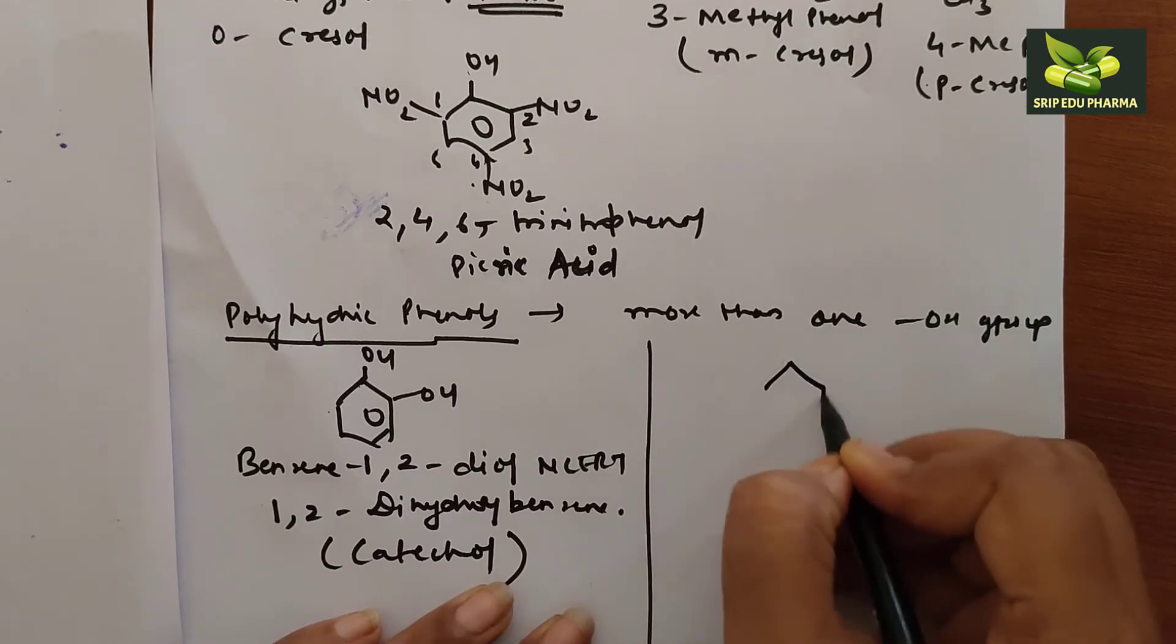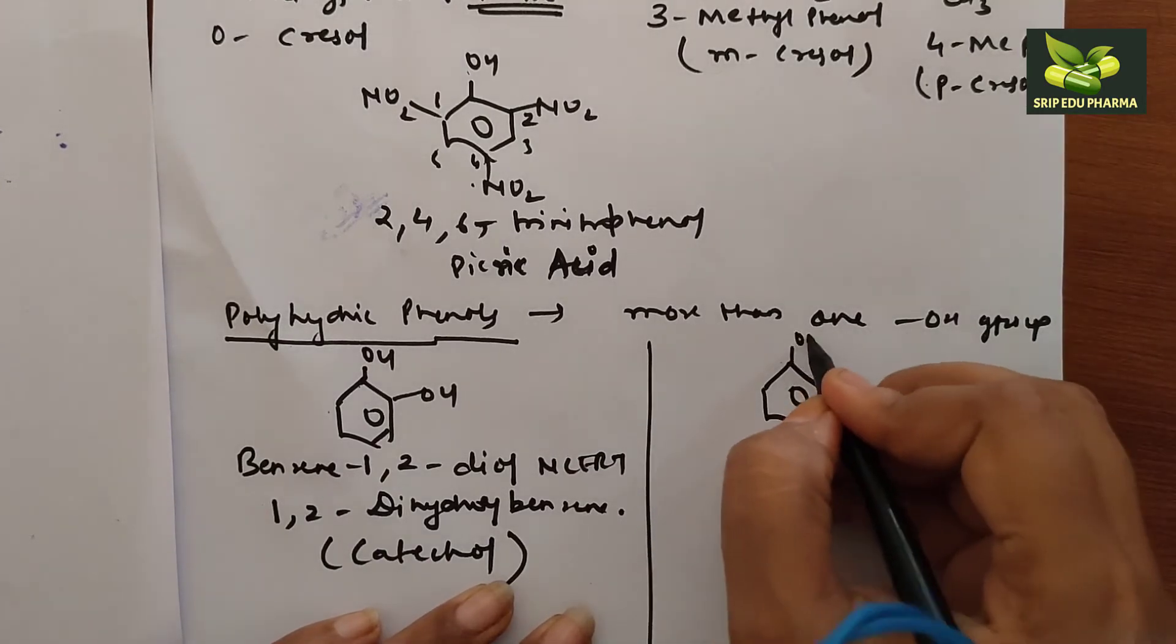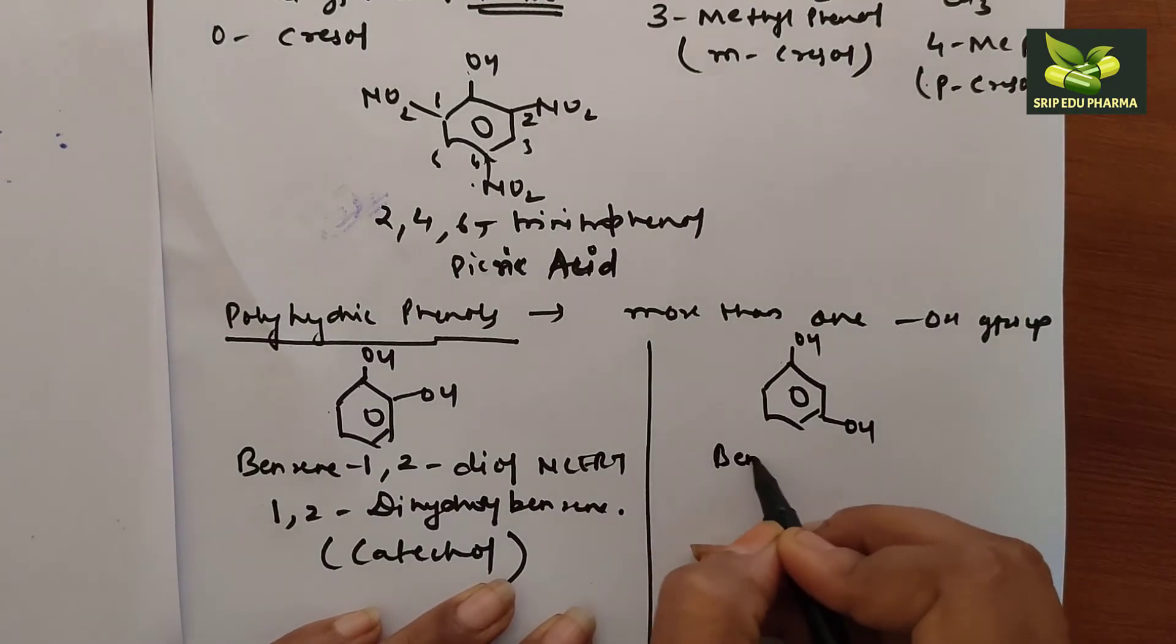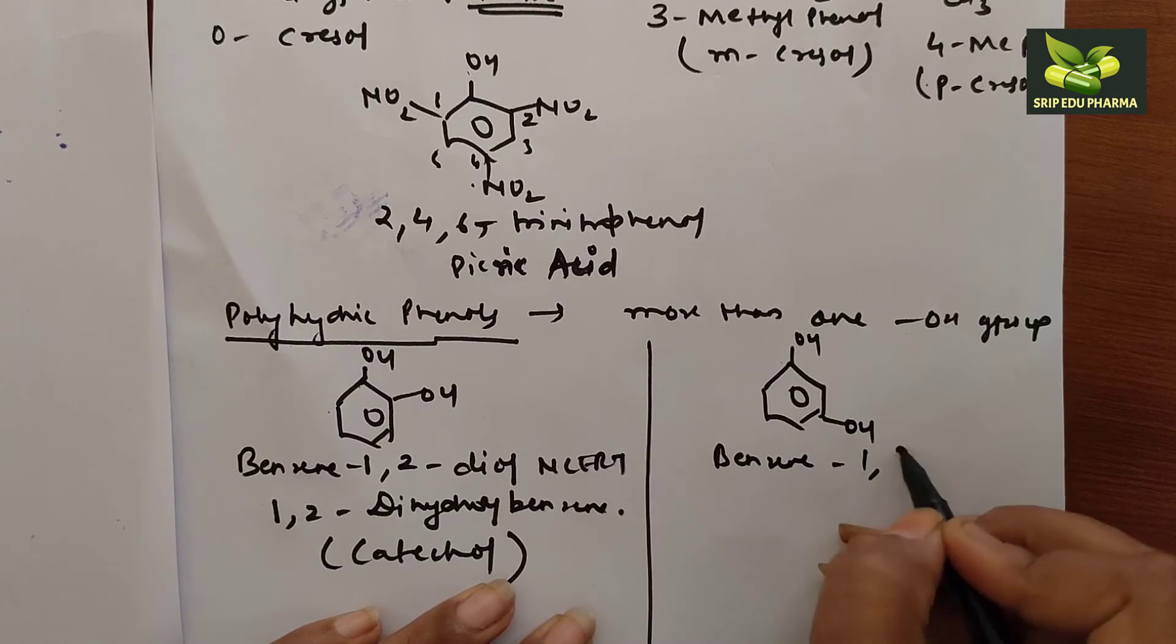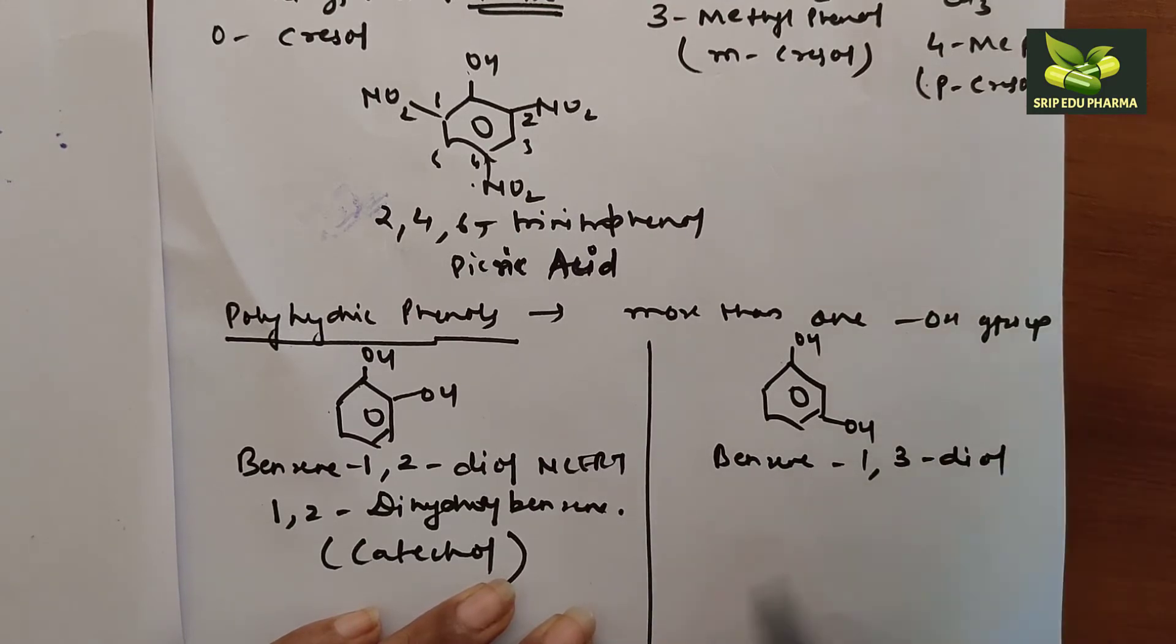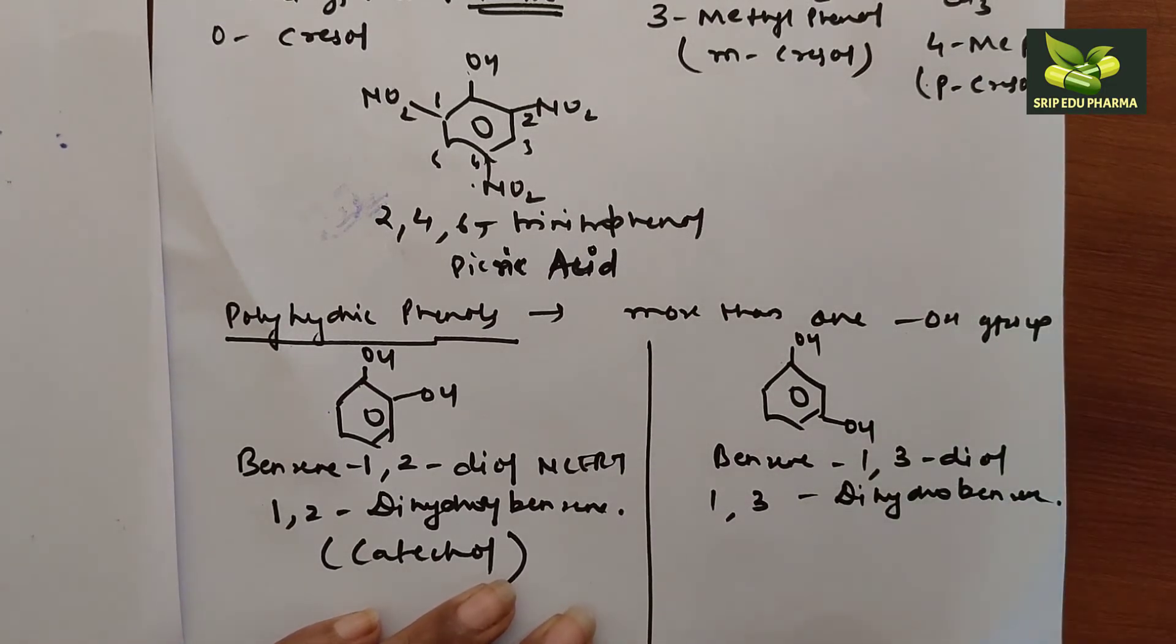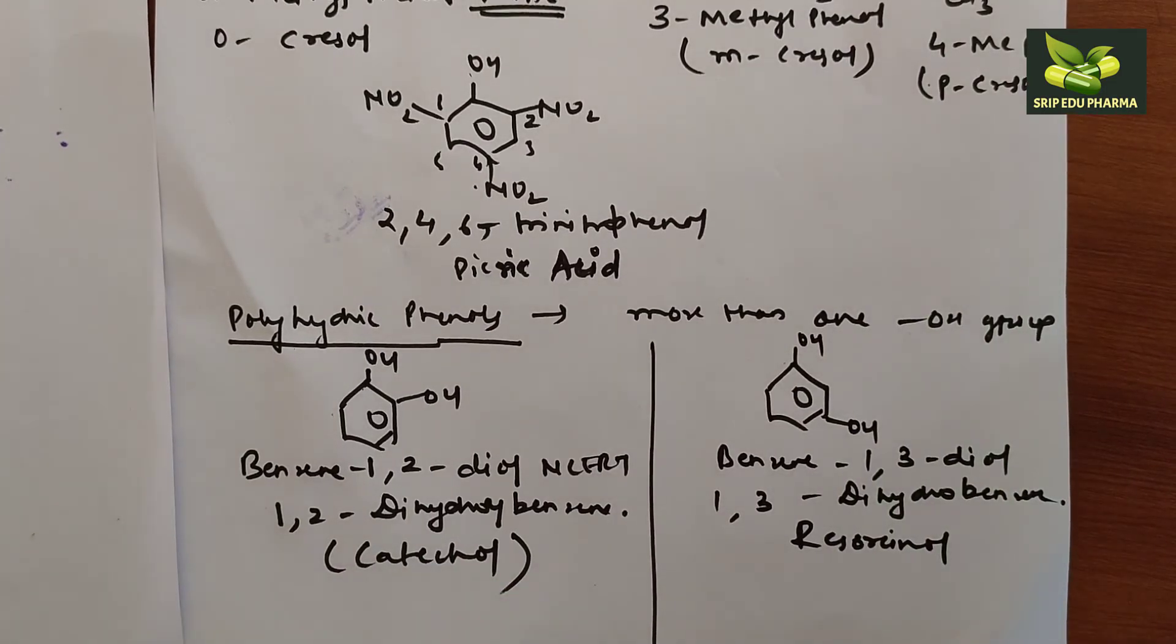One more example. This is OH, this is OH. This is called benzene 1,3-diol, or we can write it as 1,3-dihydroxybenzene. Its common name you all probably know is resorcinol. What is it called? Resorcinol.